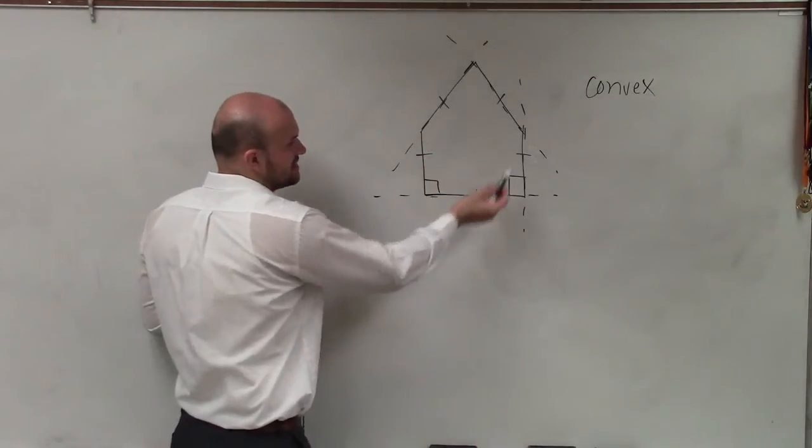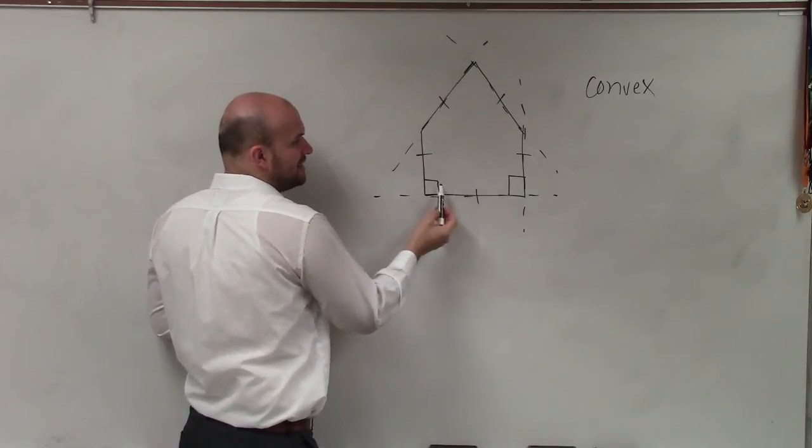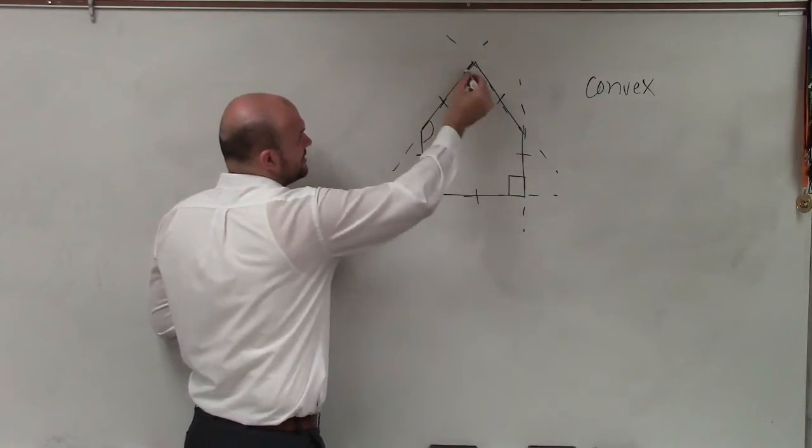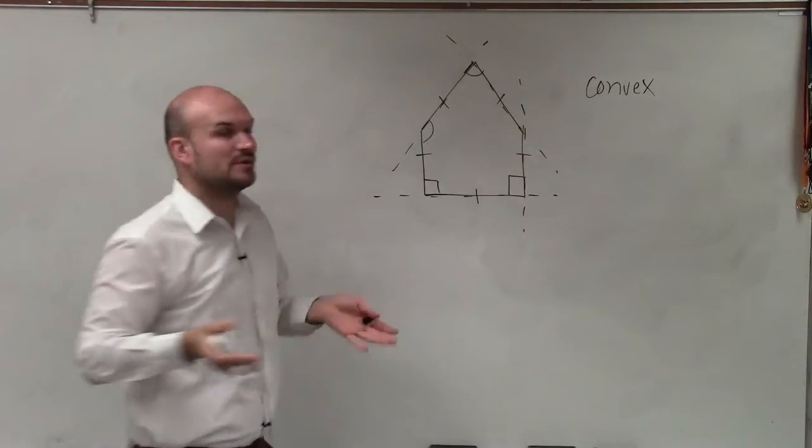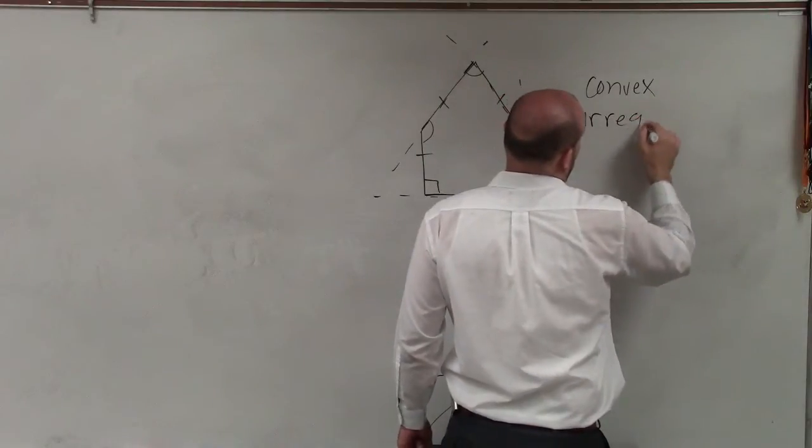So we see these tick marks on the sides. We know that all the sides are the same. However, here we have two 90 degree angles. This angle is not 90 degrees, nor is that angle 90 degrees. So therefore, we can determine it is not going to be regular, but it will be an irregular polygon.